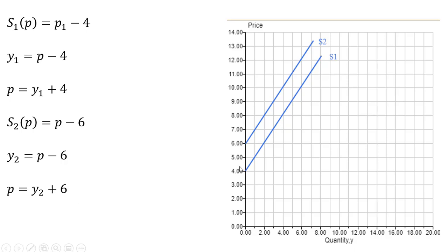Firm 2 has a vertical intercept of 6. Price goes above 6, then Firm 2 will be bringing a positive quantity supplied to the market. And the slope here is also 1.